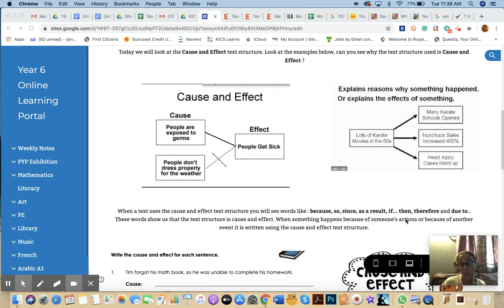That's basically what cause and effect is. It's one thing—something that happens, whether it's a character's actions or an event like a natural disaster—that then has an effect on society, people, or something else. It's just one thing that causes another thing, which is the effect.